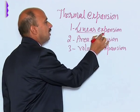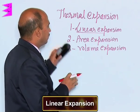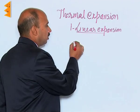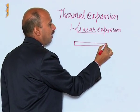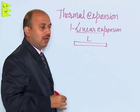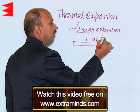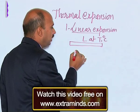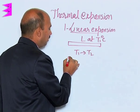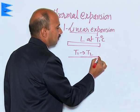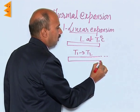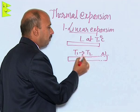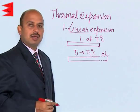Let us discuss the first one: linear expansion. In linear expansion, suppose you have taken any metal rod whose original length is L at temperature T1 degrees Celsius. Now this rod is heated from T1 to T2, and this length will increase by delta L. So when the temperature increases from T1 to T2, the length increases by delta L.